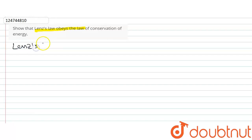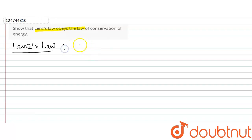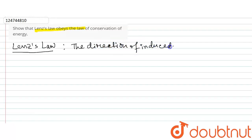Lenz's Law is the direction of induced EMF. The induced current is such that it opposes the changes that are producing it.